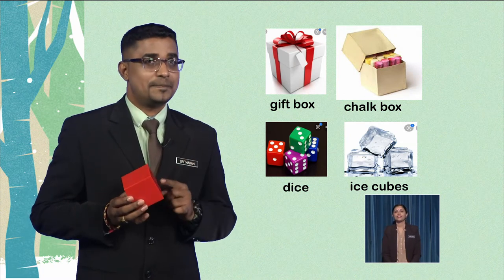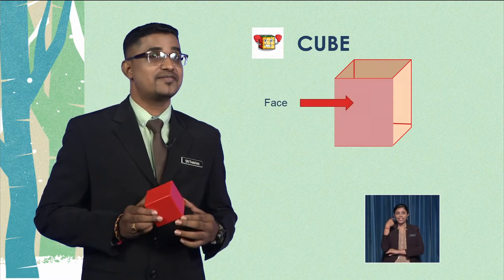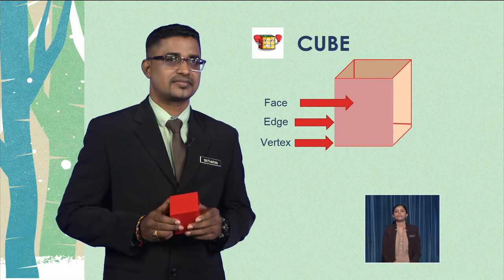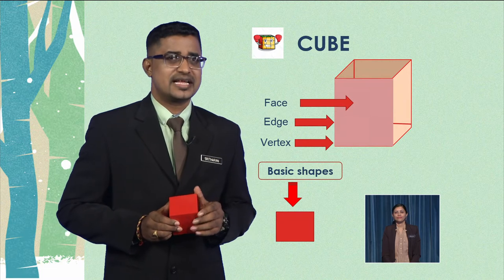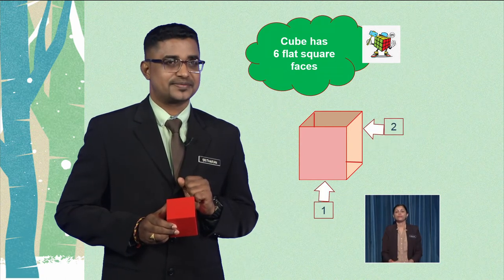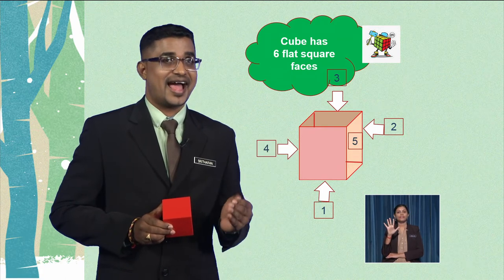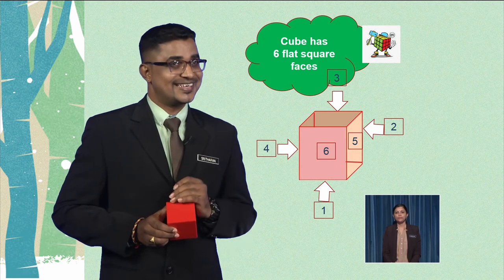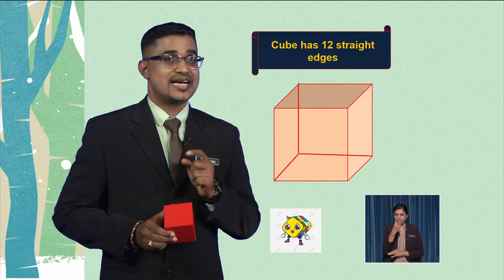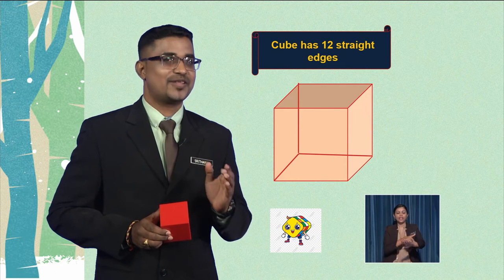Let us see the components of a cube. A cube has a face, an edge, and a vertex. This is the basic shape of a cube. When you look at this picture, the cube has 6 flat square faces. Let's count them together: 1, 2, 3, 4, 5 and 6. Well done! Do you still remember which one is the edge of the cube? Yes, correct. A cube has 12 straight edges.